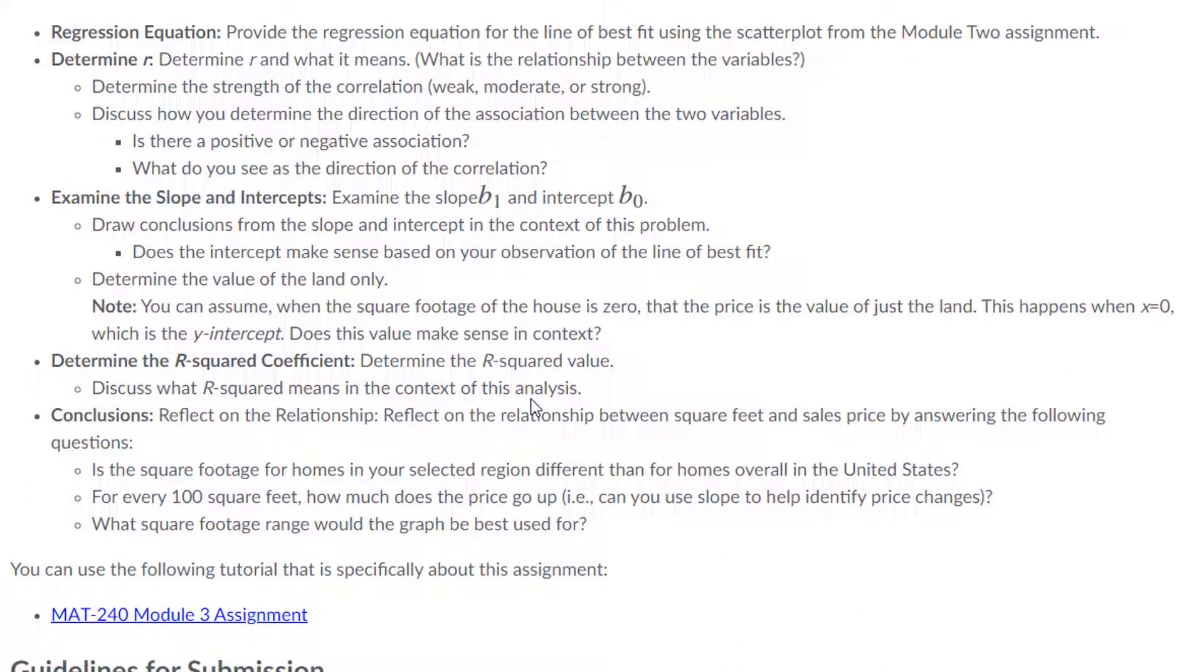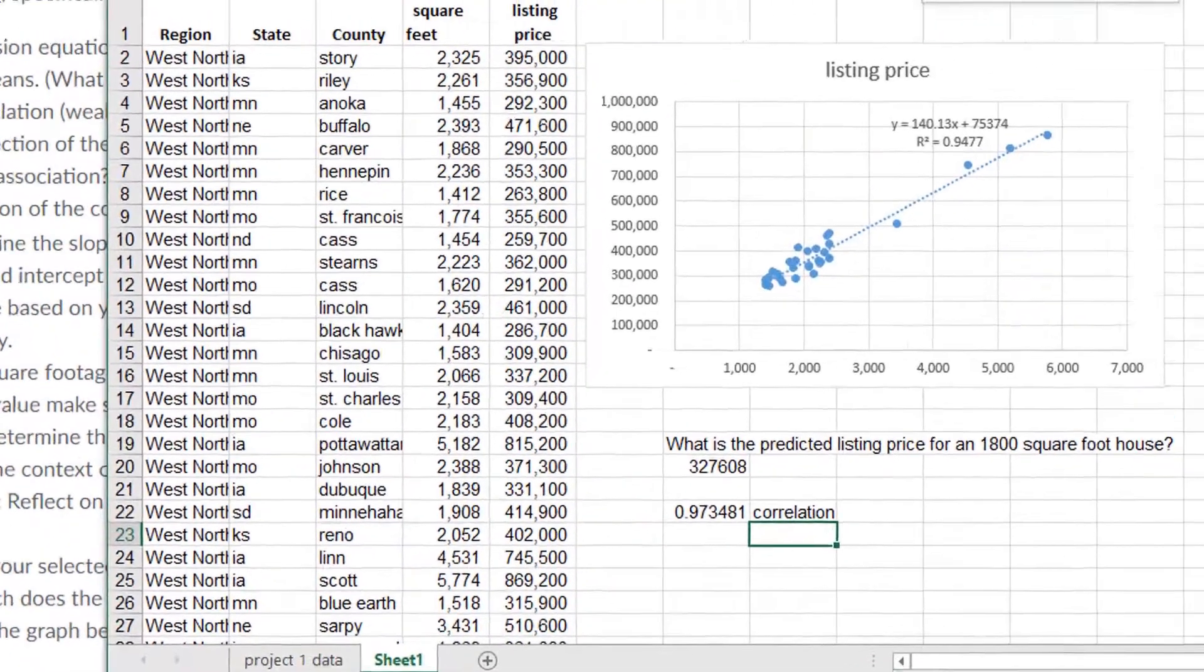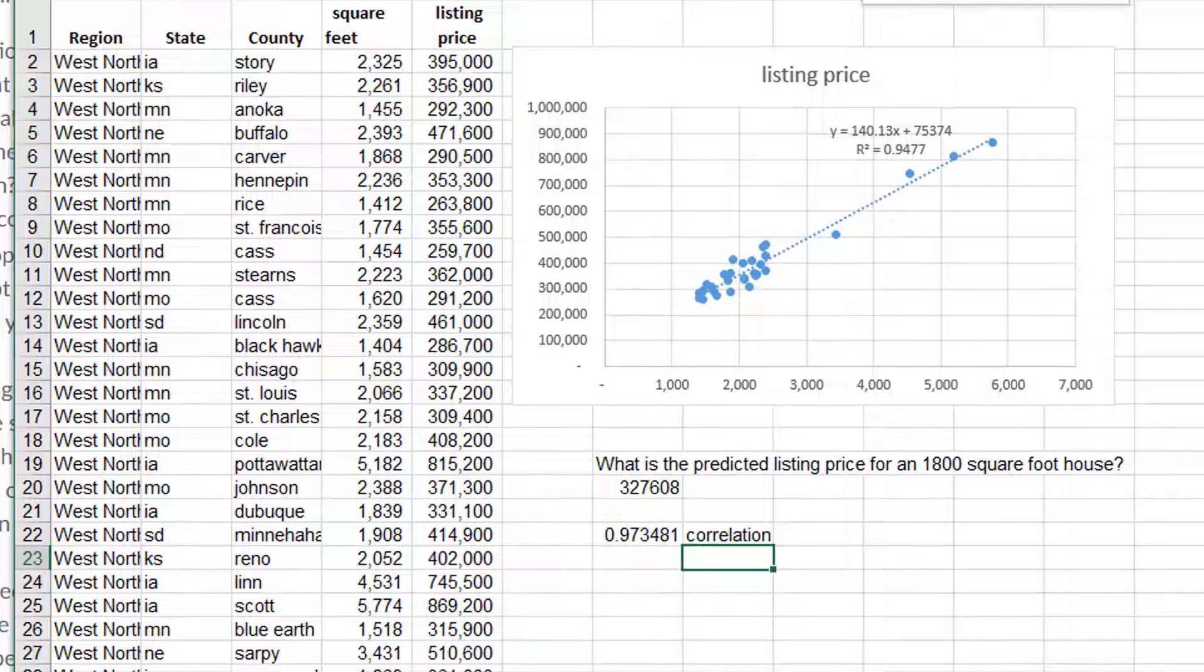So moving on, the R squared coefficient, that's the coefficient of determination. This is given in Excel. Once again, to show you, we have it on our plot. We can interpret that. That 0.9477, that is the proportion of the variation in listing price that our model explains. Basically, that's the proportion of variation in listing price that's explained by variations in square footage.